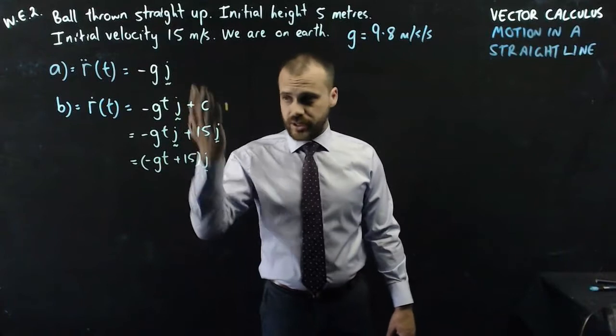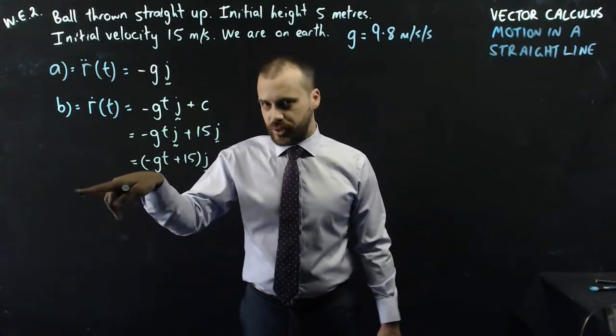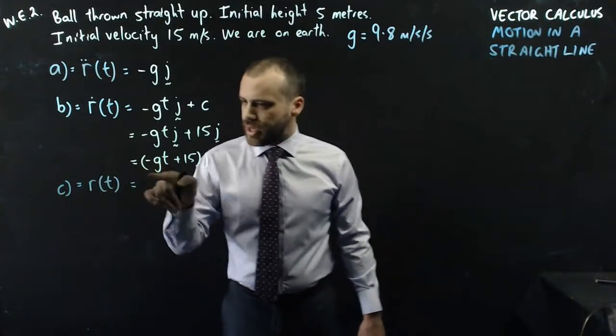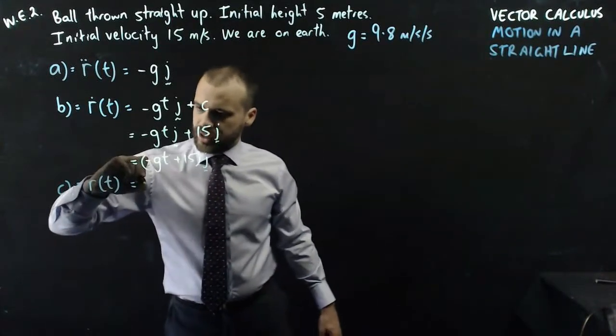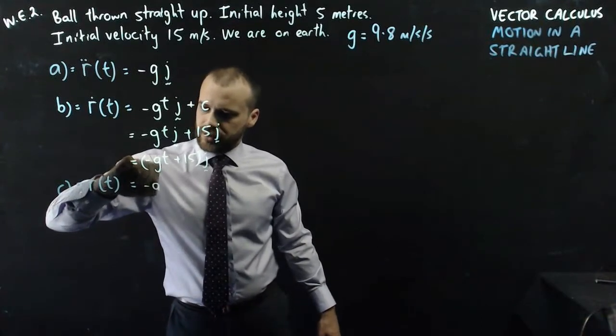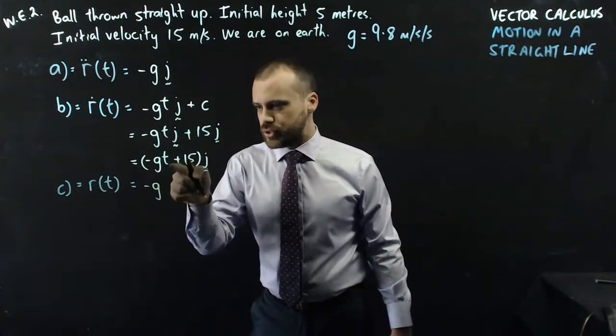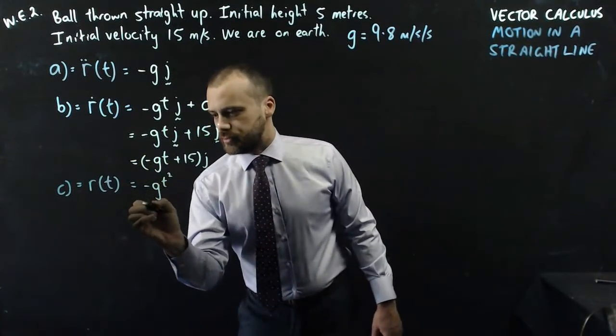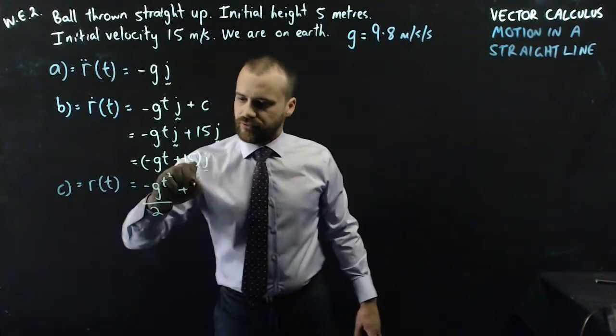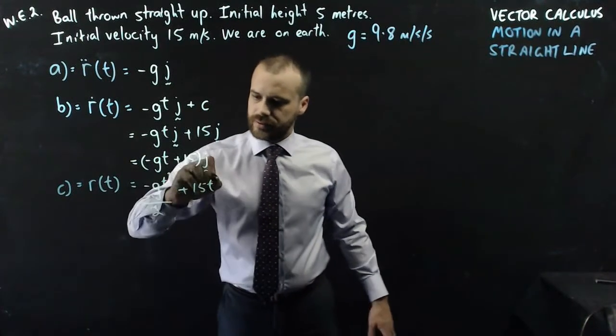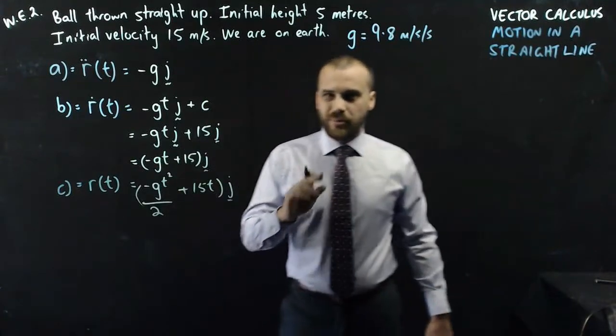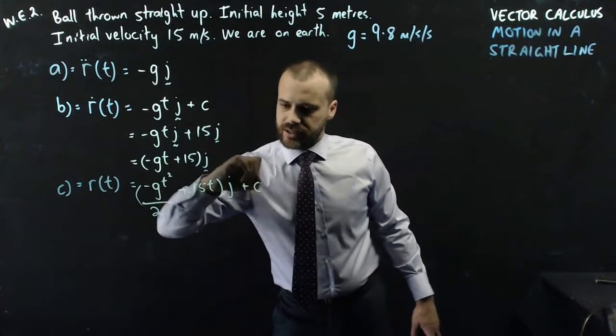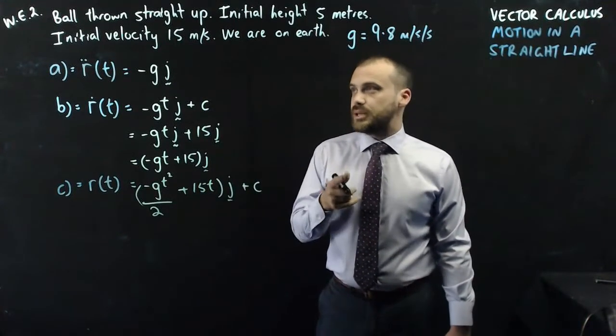Now that we've got our acceleration, now that we've got our velocity, you absolutely have to know what I'm going to ask here. Yep, displacement function. So we're going to anti-differentiate this. So again, we have -g. We're going to have to square that t and then divide by that 2. Plus 15t. All of that's in the j component, but we also are anti-differentiating, so there must be a plus c on the end.